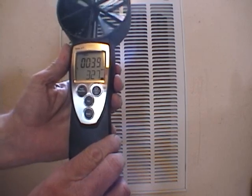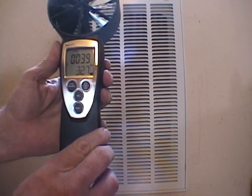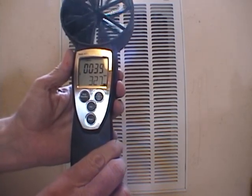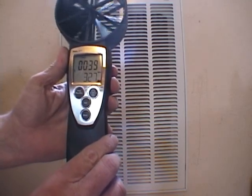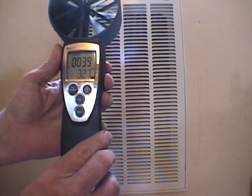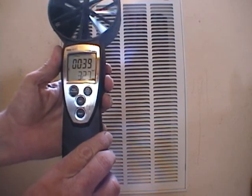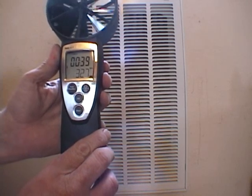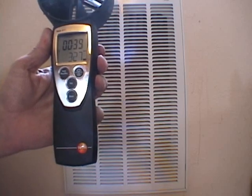Typical design is you don't want anything over 400 feet per minute for a return grill. So now we can measure this grill, use the square inches and square feet, and calculate our CFM system or input it into our spreadsheet or software and let it calculate the CFM. Let's measure this grill now.